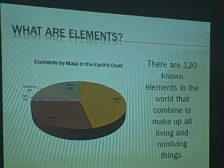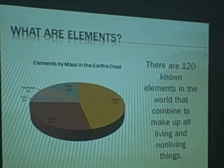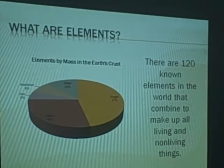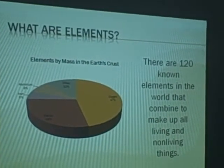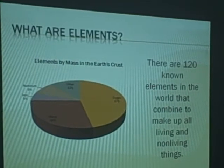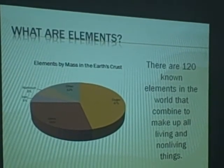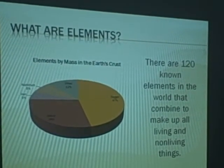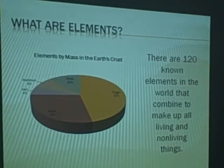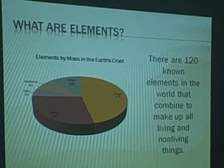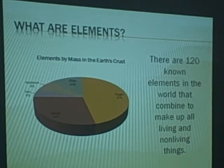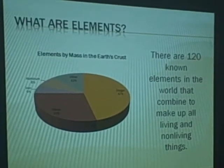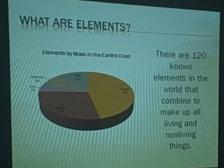The elements. There are 120 known elements in the world that combine to make up all living and non-living things. If it's made of matter, it has elements in it. The earth's crust is primarily made of the element oxygen. It also has silicon, aluminum, iron, and about 12% of the rest of the things in the earth's crust are other elements.